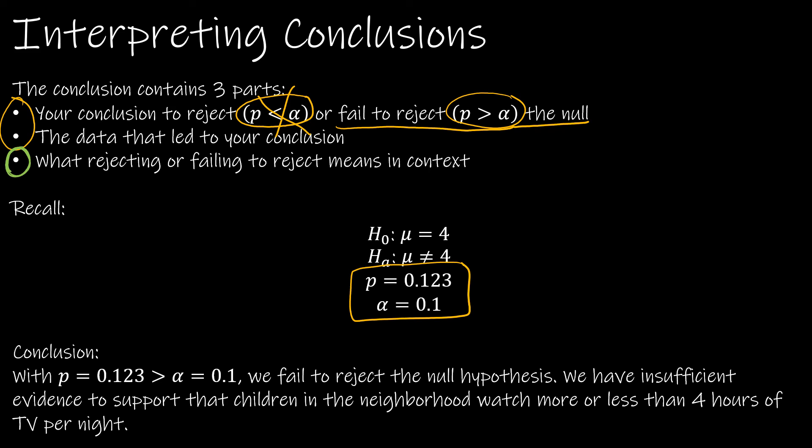In this case, it means we have insufficient evidence to say that this is true. The alternative says we have insufficient evidence to support that children in the neighborhood watch more or less than four hours of TV per night. Again, that is different than four hours of TV per night.